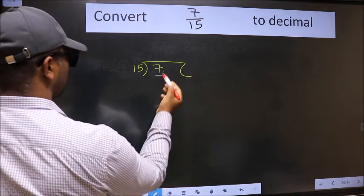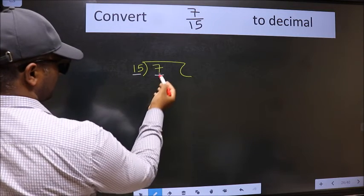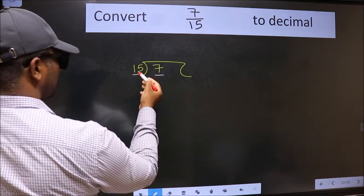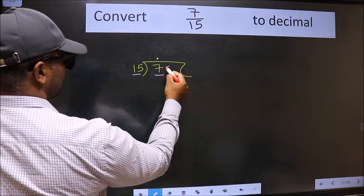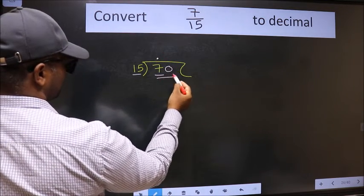Next, here we have 7 and here 15. 7 is smaller than 15. So, what we should do is we should put dot and take 0. So, 70.